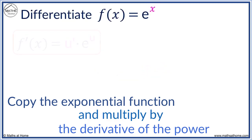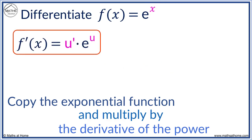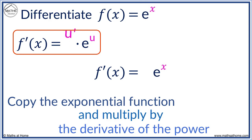Here, we differentiate e to the x. We copy e to the x. Now, we differentiate x to get 1. However, we do not need to write the coefficient of 1. The derivative of e to the x is just e to the x.